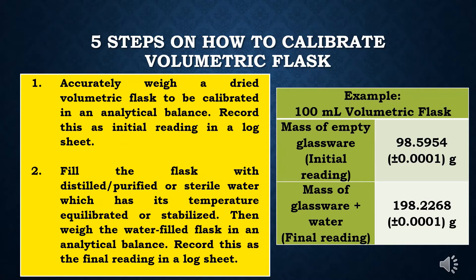For the volumetric flask, the steps are as follows. Step 1: accurately weigh a dried volumetric flask to be calibrated in an analytical balance; record this as the initial reading in a log sheet. Step 2: fill the flask with distilled, purified, or sterile water which has its temperature equilibrated or stabilized.